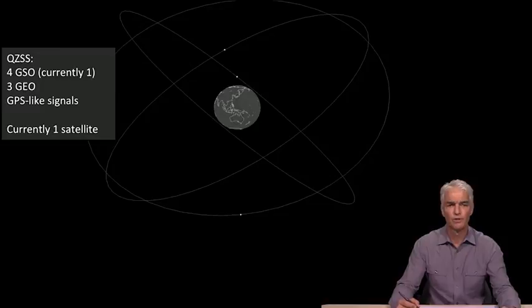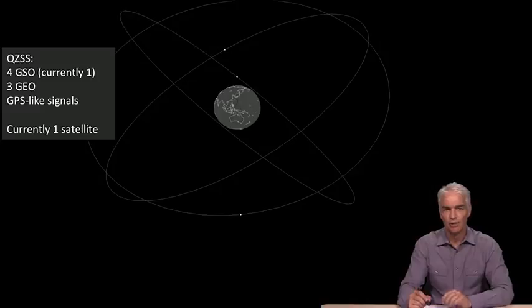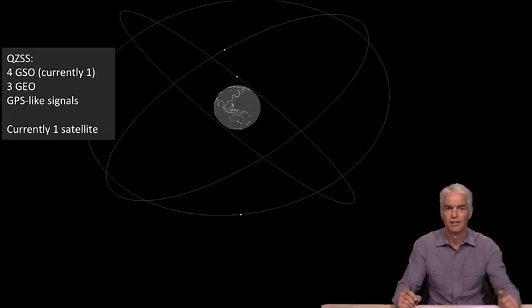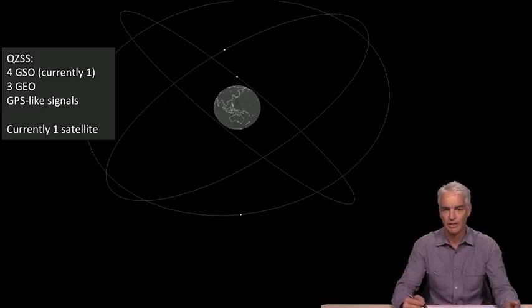So a little summary of QZSS. There currently is just one satellite in the system, but there will be seven satellites. There will be four geosynchronous satellites following these orbits, chasing each other around this asymmetric eight, and then three geostationary satellites hovering over the equator at approximately the longitude of Japan. And in terms of the signals they provide, they provide GPS-like signals. The signal structure is just like GPS so that it's easy to make a GPS receiver that's compatible with QZSS. There are several models of GPS receivers on the market right now in cell phones that have QZSS capability.